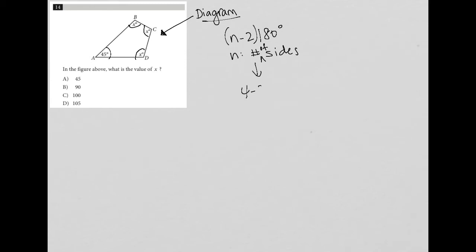So what we're going to have is four minus two times 180, which is just two times 180, which equals 360 degrees. We know that 45 degrees plus X degrees plus X degrees plus X degrees - the sum of the four angles - must equal 360 degrees. So when I simplify this, 45 plus 3X equals 360.